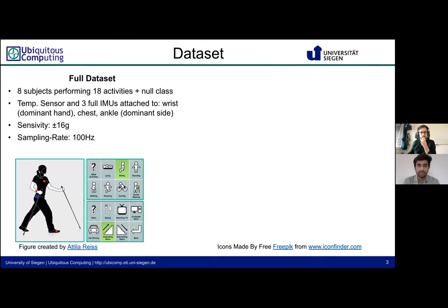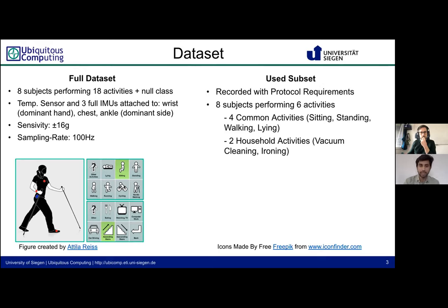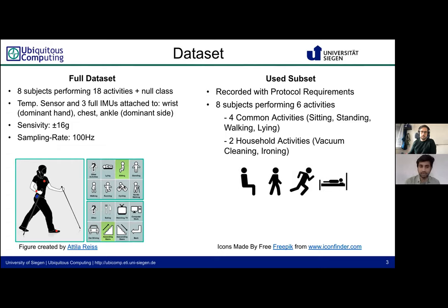We decided to use PAMAP2 in our experiments since it is widely known in the community and has proven usability for deep learning applications. We deleted the null class as mentioned by the authors, since this class only contains data from attaching the device to participant bodies, and reduced our dataset to eight subjects performing six different activities defined by the experiment protocol. After studying the protocol in detail, we found classes are imbalanced. We chose eight subjects and six activities: four common activities — sitting, standing, walking, and lying — as well as two household activities: vacuum cleaning and ironing.